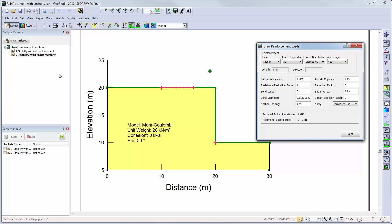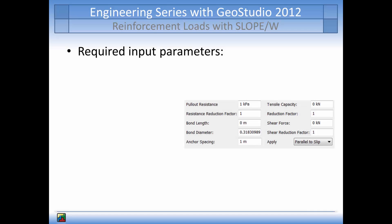For the anchor reinforcement load, the bond length is the grouted length and will influence the calculation of the pull-out force. When simulating reinforcement loads, in particular when using anchors or nails, the required inputs are: